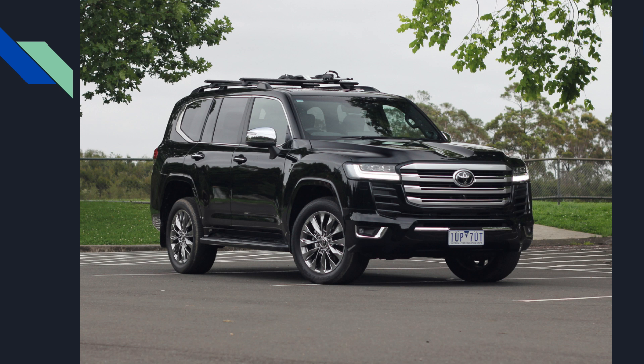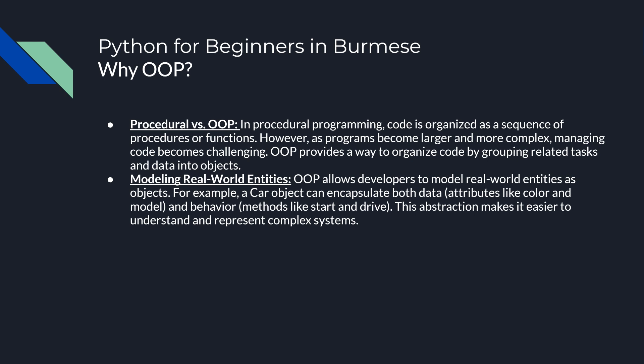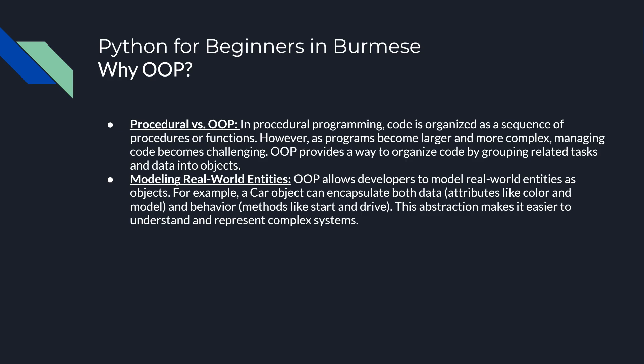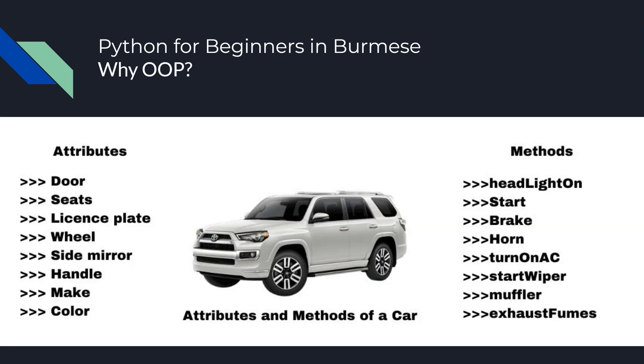The attributes are the properties — for example, behaviors and methods are known as functions. The engine, brake — these are the methods. The class and the object is defined in the object.